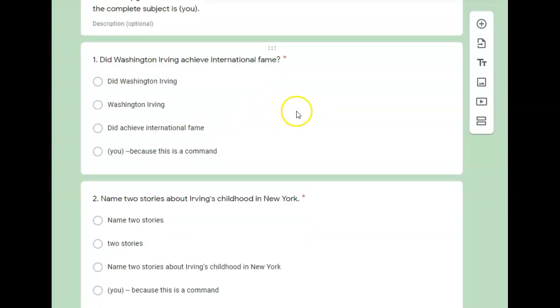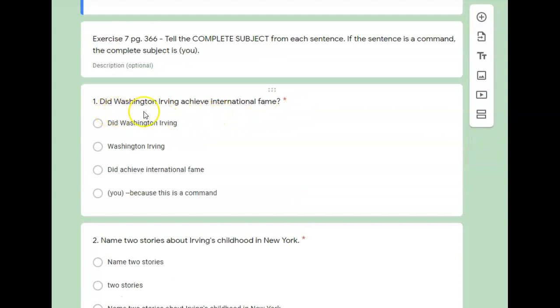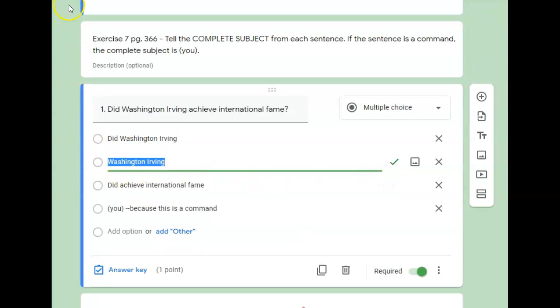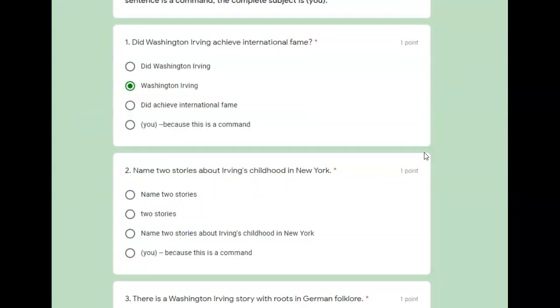So number one, we're dealing again with complete subject. Did Washington Irving achieve international fame? Who or what is that sentence about? Did Washington Irving achieve international fame? Well, it's about that guy, Washington Irving. And did would go with the predicate with achieve. So it's just his name, Washington Irving.